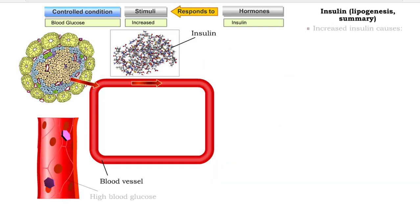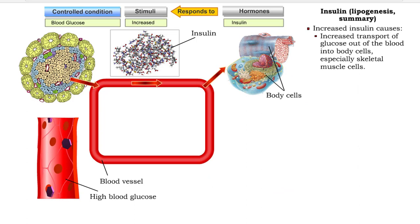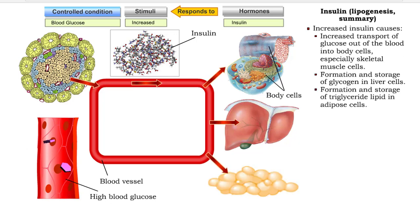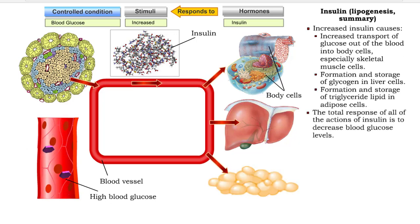Increased insulin causes increased transport of glucose out of the blood, formation of glycogen, and formation of fat. The total response of all the actions of insulin is to decrease blood glucose levels.